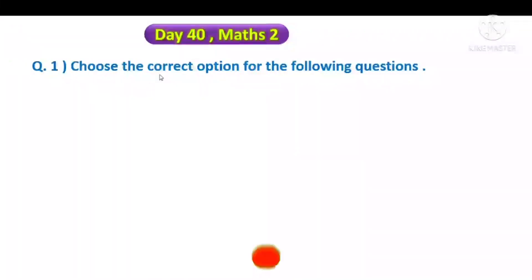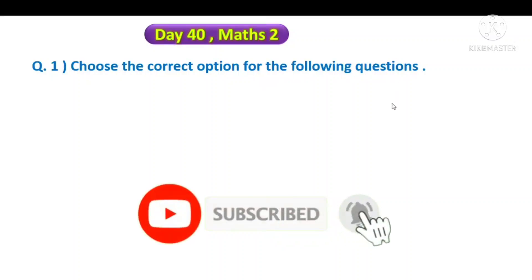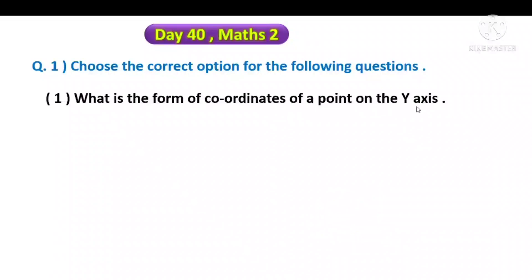First question: choose the correct option for the following questions. First, what is the form of coordinates of a point on the y-axis? Y-axis varil coordinates cha form kasa aahe? Four options are given. First option (a, a) means it's in the first quadrant. (0, a) means it's on the axis, and this b means it's on the y-axis. The first point (a, 0) means it's on the x-axis. We need the y-axis form, so our answer is option B: (0, b). The second option is the answer.